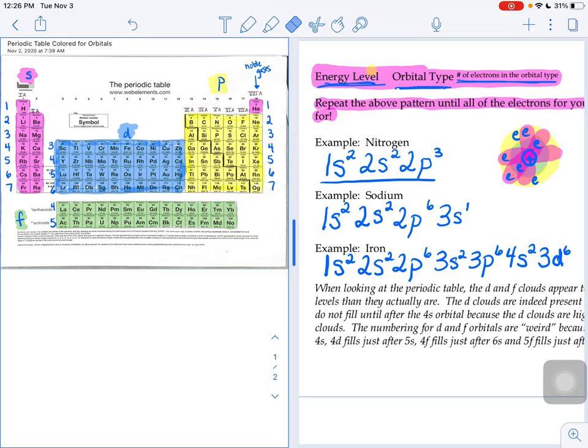So you might be wondering, is there a way that you could shorten the electron configurations? Because if the beginning is always the same, do we have to keep writing the same beginning over and over and over again? Like what if I gave you element number 114 and you had to do its electron configuration? It would fill up the whole page, right? So is there a way to shorten this?